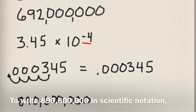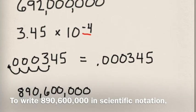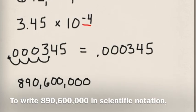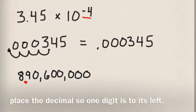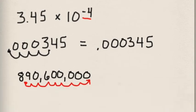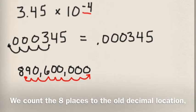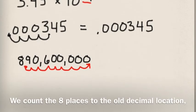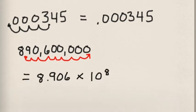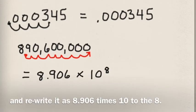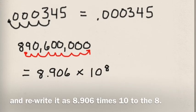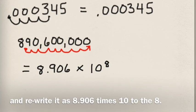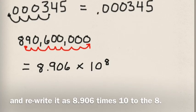To write 890,600,000 in scientific notation, place the decimal so one digit is to its left. We count the 8 places to the old decimal location and write it as 8.906 times 10 to the 8th.